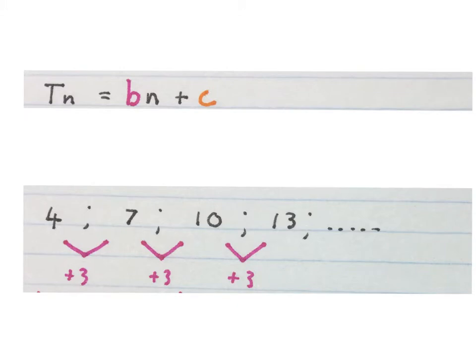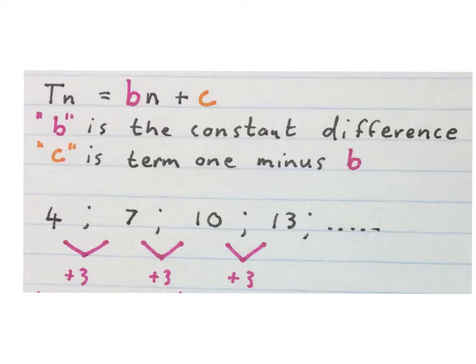If you see that you have a linear pattern like we have over here, then you write down the formula Tn = bn + c. In this formula, b is the constant difference, this 3 that you see here we're going to fill in there, and c is term 1 minus b, so this 4 minus this number will give us the c.